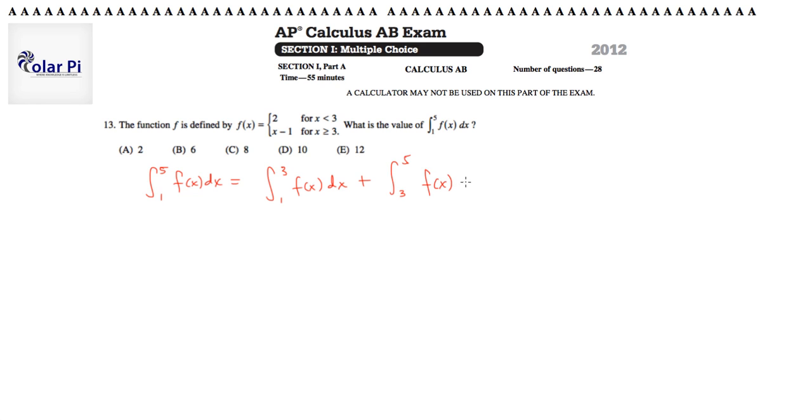Looking at f and its respective pieces, to the left of 3 it's just the constant value 2. Therefore between 1 and 3 it should be the same constant value 2. So the integral from 1 to 3 of 2 dx plus the integral from 3 to 5 of x minus 1 dx.